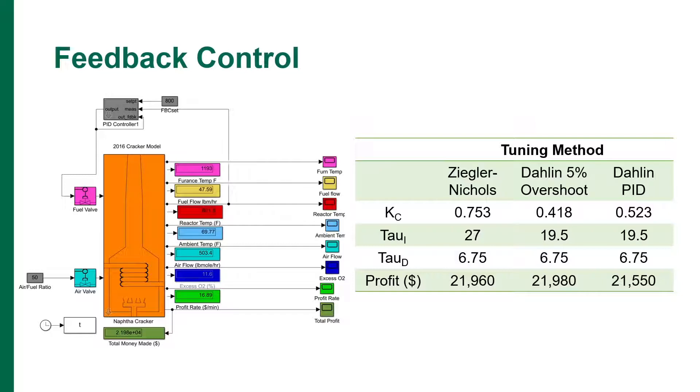The first type of control that we implemented to control the reactor temperature was feedback control of the proportional integral derivative or PID type.